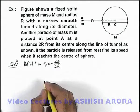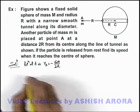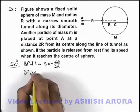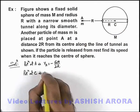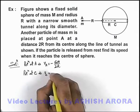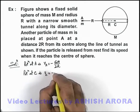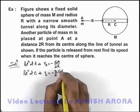In this situation, if we wish to find potential at point C, which is the center where the particle is finally reaching, it can be written as: at center we know it is 3 by 2 times that of the surface, so it is minus 3 by 2 GM by R.